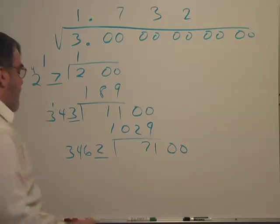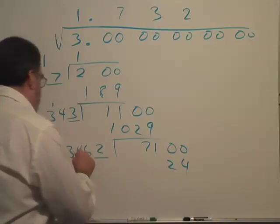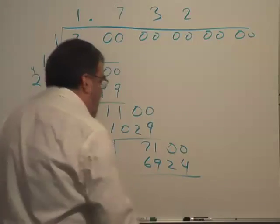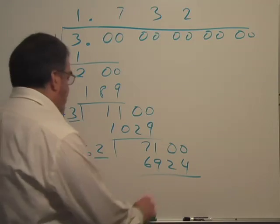2 times 3462, we get a 4, 12 carry the 1, 8 that's 9, 6, and when we subtract we get 176.